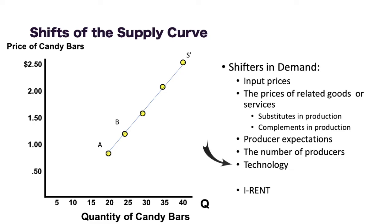Moving on to technology: if there's an improvement in technology, this is going to increase supply. Using our burger example, if we get technology that's able to produce burgers faster or a new grill that cooks burgers much quicker, then we'd be able to pump out more burgers faster, leading to more supply — pushing the supply curve to the right. If technology is no longer available, that would be a decrease in supply.